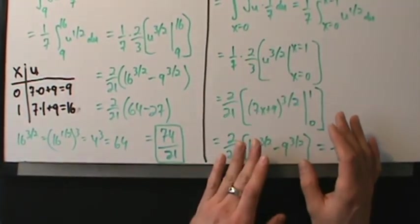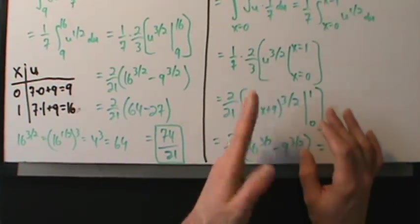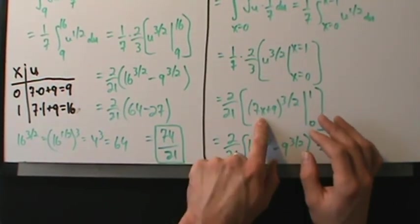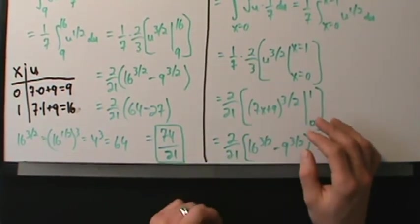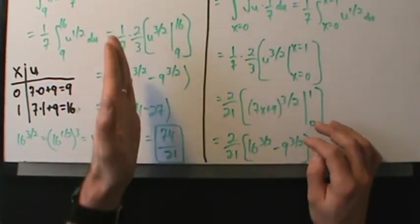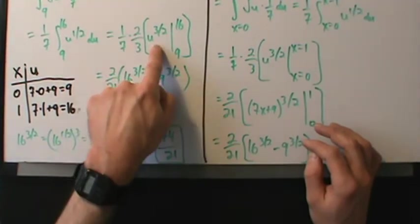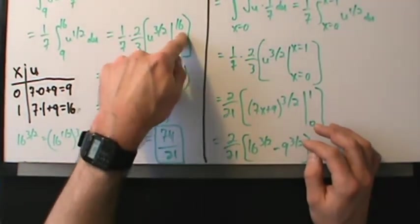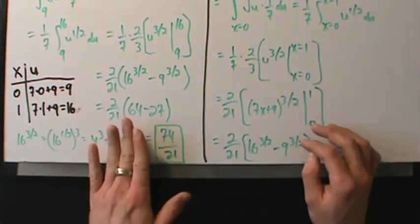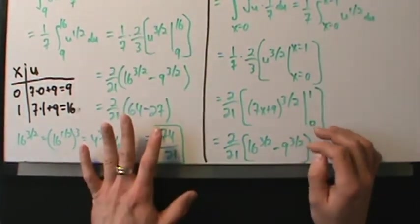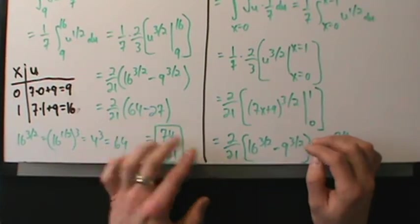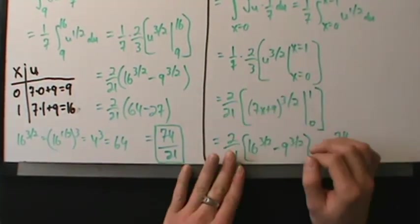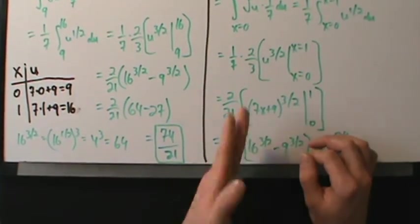Method 2 has those nasty expressions for x. It's much simpler to work with u^(3/2) from 9 to 16 than with (7x + 9)^(3/2) from 0 to 1. Though in this example it's not terrible, if you have a complicated expression it could be much worse.